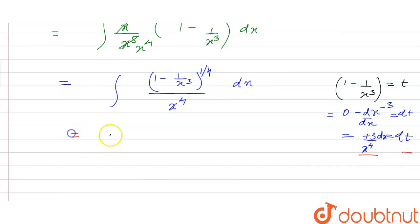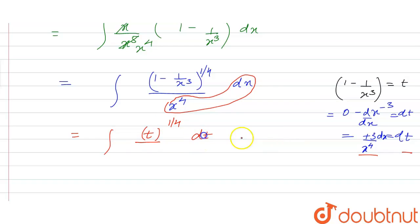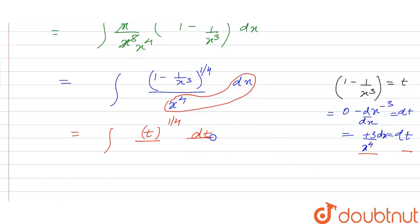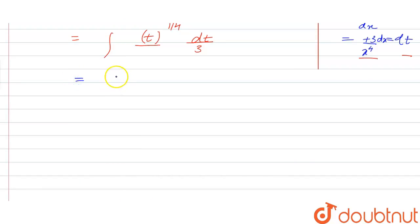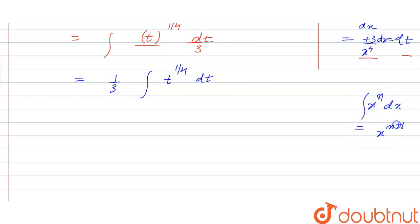So we have the integral of t raised to power 1 by 4, and this term gives dt divided by 3. We have 1 by 3 common, giving integration of t raised to power 1 by 4 dt. Using the formula: integral of x raised to power n dx equals x raised to power n plus 1 upon n plus 1 plus constant c, we integrate to get 1 by 3 into t raised to power 1 by 4 plus 1 upon 1 by 4 plus 1.